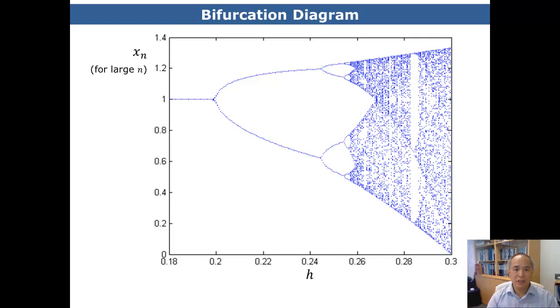This is a picture showing you the bifurcation of the equilibrium points. As you can see, the vertical axis here shows the x_n for large value of n, meaning that we are approaching convergence, if there is convergence. And we see that for small values of h, horizontal axis shows the h value, we have one equilibrium point. But as h increases, we have two, and then four, and then eight, and then we can't see any pattern after that.